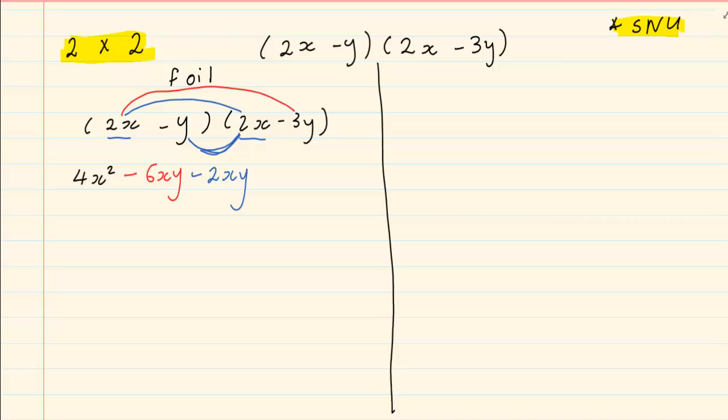Then we have got last. Last means the last ones in each bracket. Negative and negative is positive. 3y squared.